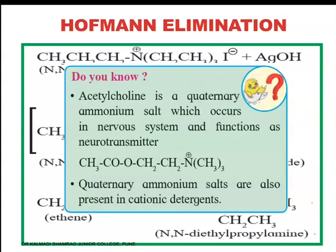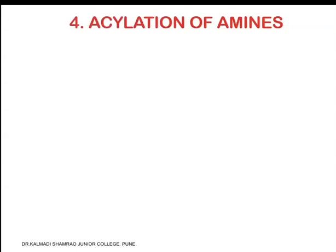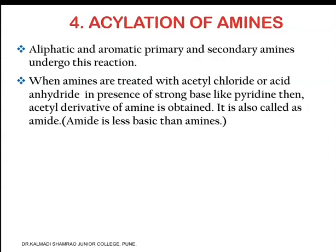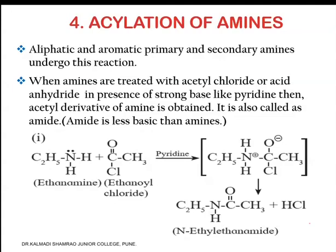The fourth reaction is acylation of amines. Aliphatic and aromatic primary and secondary amines undergo this reaction. When amines are treated with acetyl chloride or acid anhydride in the presence of a strong base like pyridine, the acetyl derivative of the amine is obtained — also called an amide. Amide is less basic than amines. Ethanamine on reaction with ethanoyl chloride (acetyl chloride) in the presence of pyridine gives an adduct where the lone pair of nitrogen is donated to the carbonyl carbon, which then undergoes loss of hydrogen chloride to form N-ethyl ethanamide.